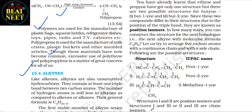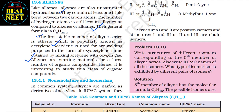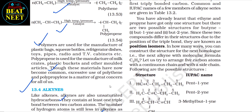13.4 Alkynes: like alkenes, alkynes are also unsaturated hydrocarbons. They contain at least one triple bond between two carbon atoms; the number of hydrogen atoms is still less in alkynes compared to alkenes or alkanes. Their general formula is CₙH₂ₙ₋₂. The first stable member of the alkyne series is ethyne, popularly known as acetylene, which is used for arc welding in the form of an oxy-acetylene flame. Alkynes are starting materials for a large number of organic compounds.